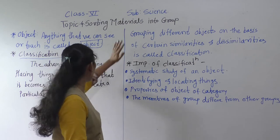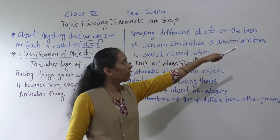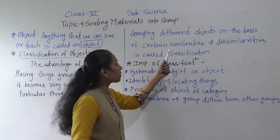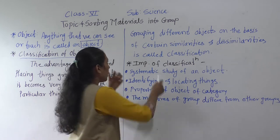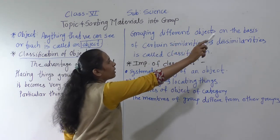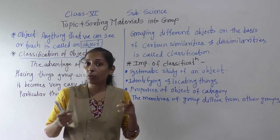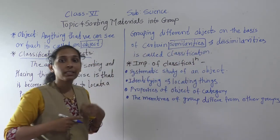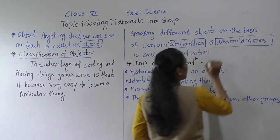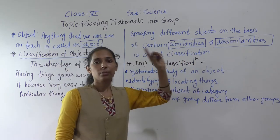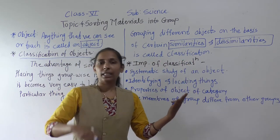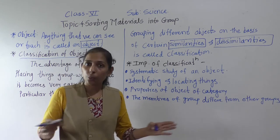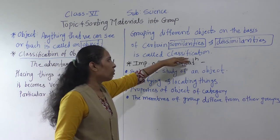So what is the classification of an object? Grouping different objects on the basis of certain similarities and dissimilarities is called classification. Through this process, objects can be sorted and given group-wise separation.